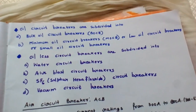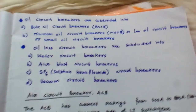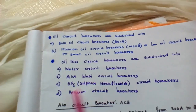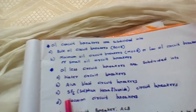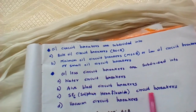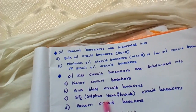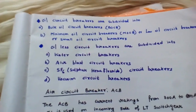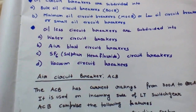Oil-less circuit breakers are also subdivided into several types: water circuit breakers, where water is used as the arc extinguishing medium; air blast circuit breakers, where a blast of air is used; SF6 — sulfur hexafluoride — circuit breakers, which is the latest technology and is also called a gas insulated circuit breaker; and vacuum circuit breakers, where vacuum is used as the arc extinguishing medium.